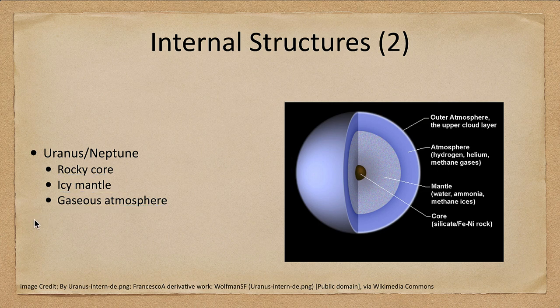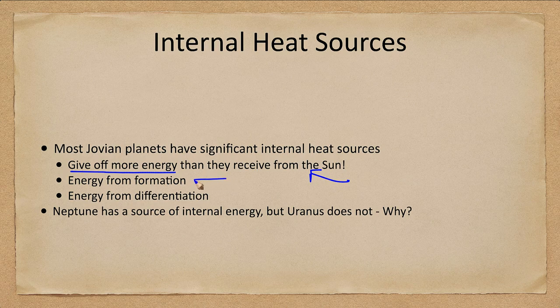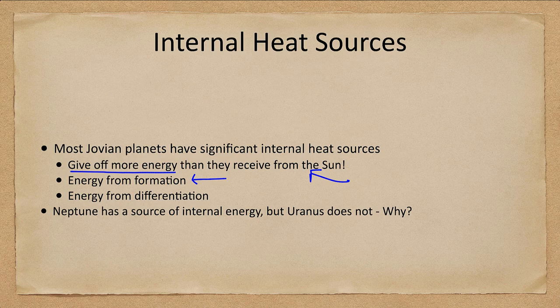We also note that these planets have internal heat sources — meaning they give off more energy than they receive from the Sun. Where does this extra energy come from? It could be energy left over from the formation: when the planet forms, material falls into it having kinetic energy, and as that material moves into the planet it eventually stops and that kinetic energy is converted to heat, which is trapped deep within the planet and slowly leaks out. You can also have energy from differentiation — again a conversion of energy into heat that then slowly comes out.